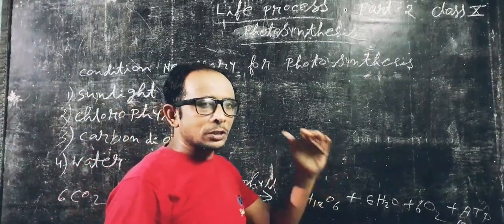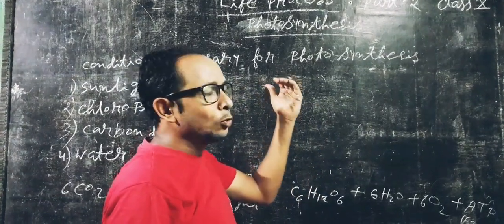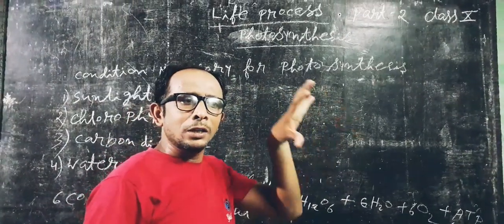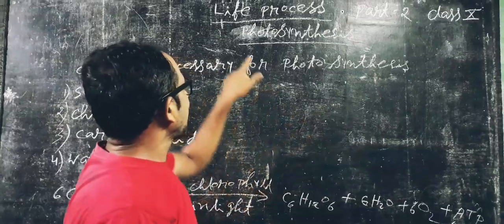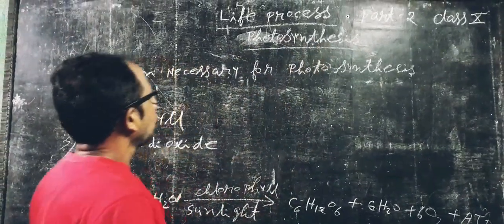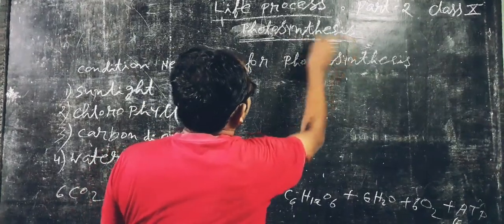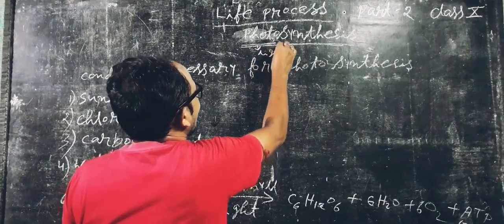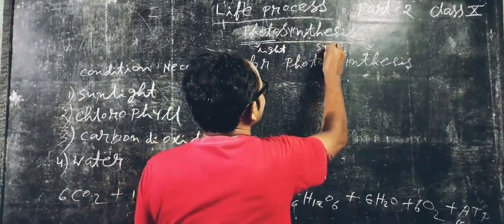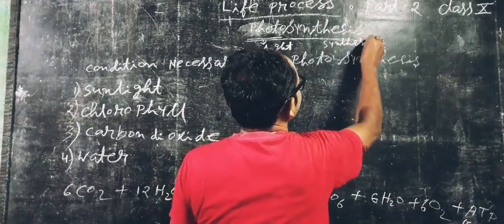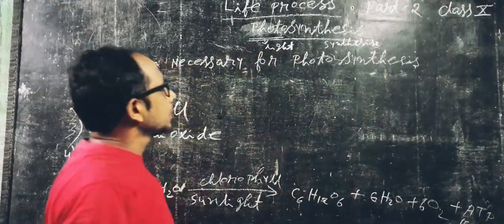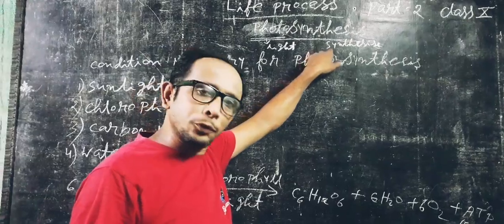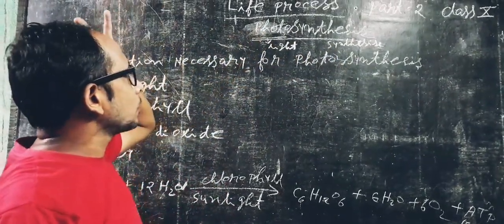In autotrophic mode of nutrition, the organisms — meaning plants — form food, meaning glucose. The process through which autotrophs make their food is known as photosynthesis. Photo and synthesis are two words: photo means light, and synthesis means to synthesize. So photosynthesis means synthesizing food — that means glucose — in the presence of light.